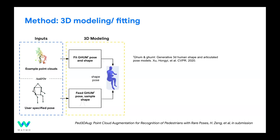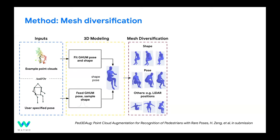If your input is a point cloud, you fit it into the parameterized model — here we use SMPL — which gives you pose and shape predictions. For the second type of input, you can also feed the model to generate random poses or shapes on top of skeletons. The next step is to perturb the generated pose and shape parameters to generate a large variety of meshes.